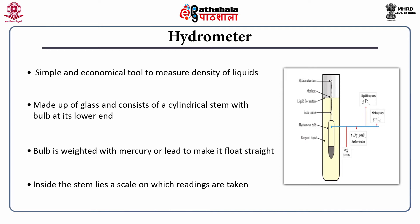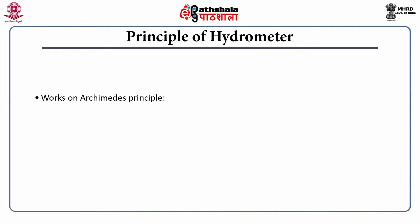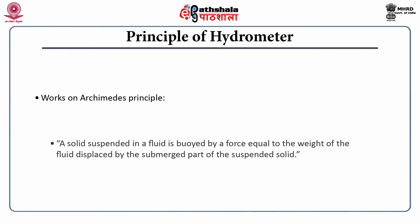Once you dip the hydrometer inside the liquid whose specific gravity you want to measure, swirl it a little bit, and the hydrometer shall automatically float. The value you see at the surface of the water — the calibration value or the scale value — shall be the reading you need to take. The hydrometer works on Archimedes' principle, which states that a solid suspended in a fluid is buoyed by a force equal to the weight of the fluid displaced by the submerged part of the suspended solid.